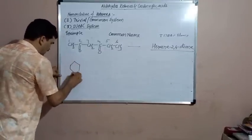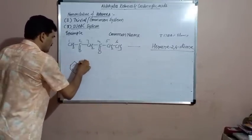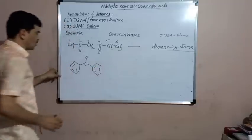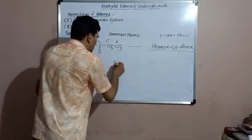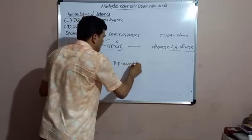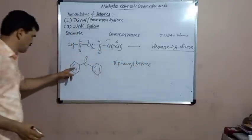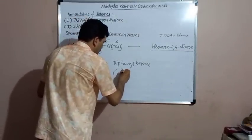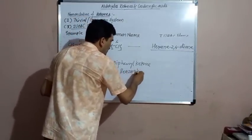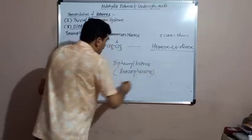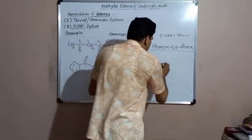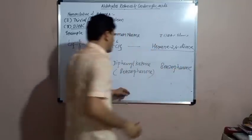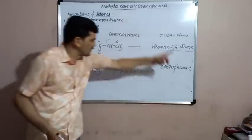Then, one more example of an aromatic ketone. This is an aromatic ketone named diphenyl ketone in the common system, because both groups are phenyl groups. But it is more popularly known as benzophenone. Benzophenone is also accepted as the IUPAC name — though it is a common name, it is accepted as the IUPAC name as well.